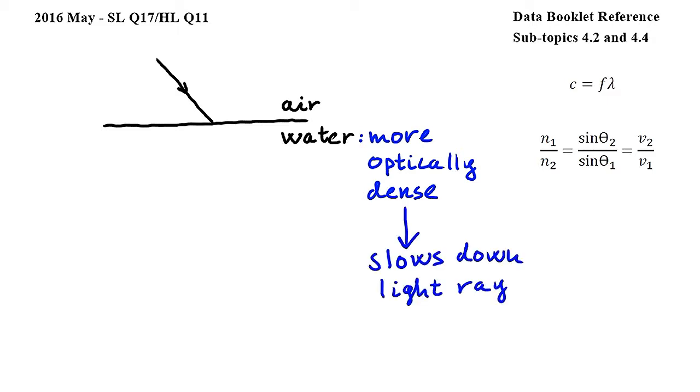First let's look at what happens to the wavelength by using this equation from subtopic 4.2, where c is the speed of the wave, f is the frequency, and lambda is the wavelength.